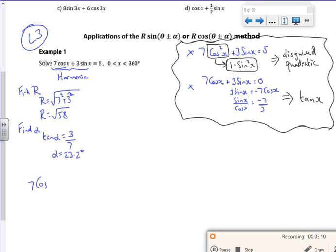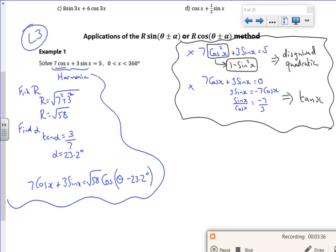So 7cosx + 3sinx is really √58. So cos came first, so cos goes down there. And if you remember we said for sine, it's the same. So this one must be a minus 23.2. So what I've done is I've done the harmonics part here. So this here is like the harmonic bit.